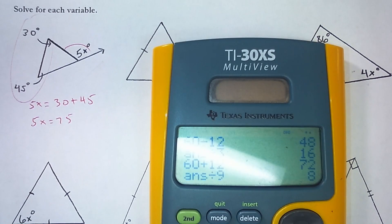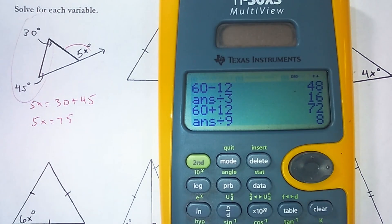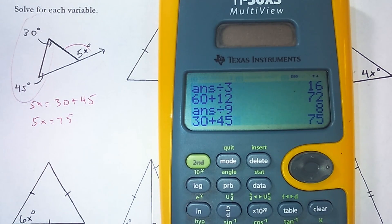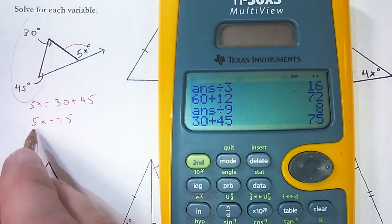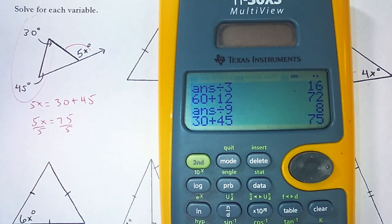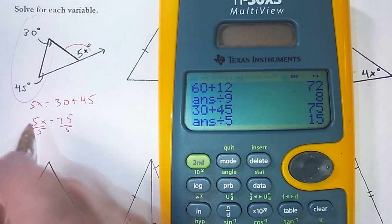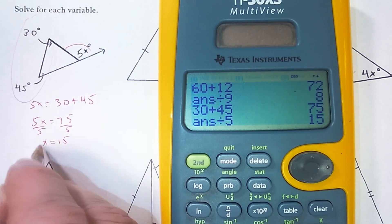So I can use this, I can check what I just did, 30 plus 45 is 75, and then divide by 5, I get 15. So x is 15.